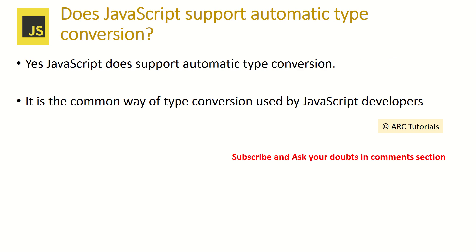Does JavaScript support automatic type conversions? Yes, JavaScript does support automatic type conversions. It is a common way of type conversion used by developers. We can have two operands, compare them at runtime, and convert them dynamically as well.